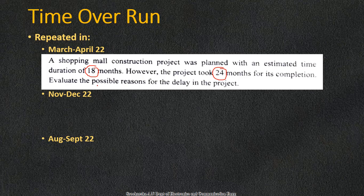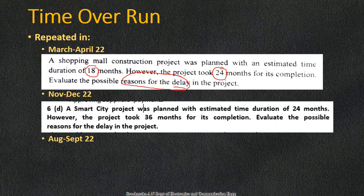You need to evaluate or reason out the delay — what may be the reasons for the delay? This hints that the question is about time overrun. Then in November/December 2022, the question was: 'A smart city project was planned with an estimated time duration of 24 months. However, the project took 36 months for its completion. Evaluate the reasons for the delay.' Again, this is about time overrun.